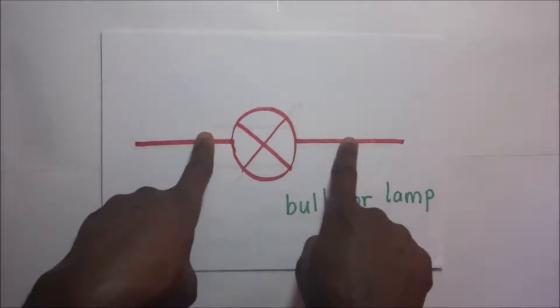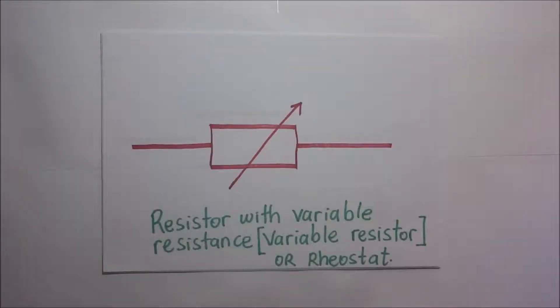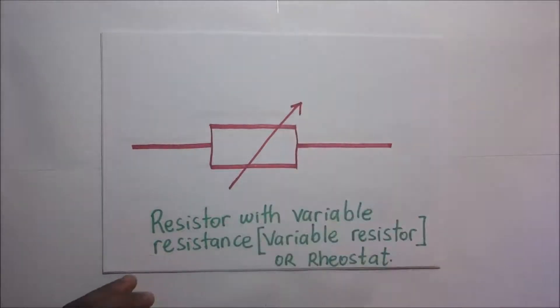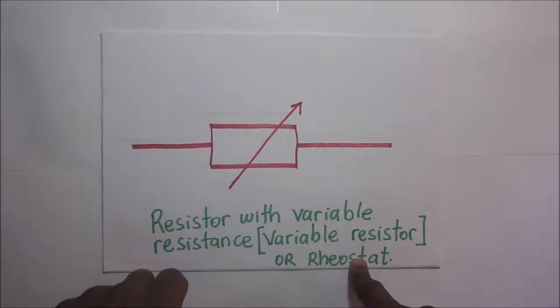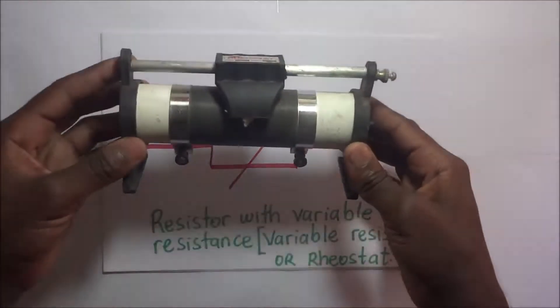Then we have a resistor with variable resistance. We represent it with that arrow. That arrow means you are going to be varying the resistance—the resistance is not constant, you can vary it. A variable resistor is also called the rheostat. Physically, this is how it looks like. This is the rheostat right there.